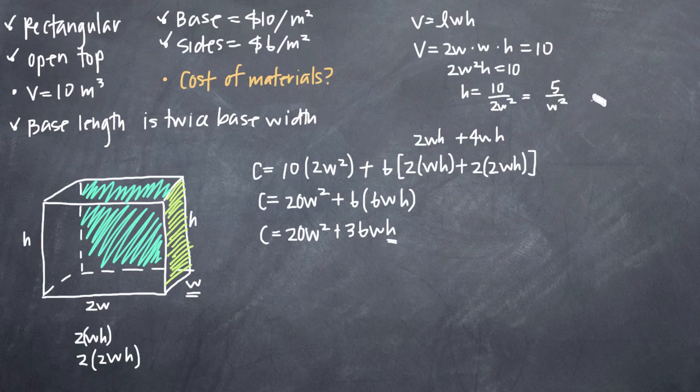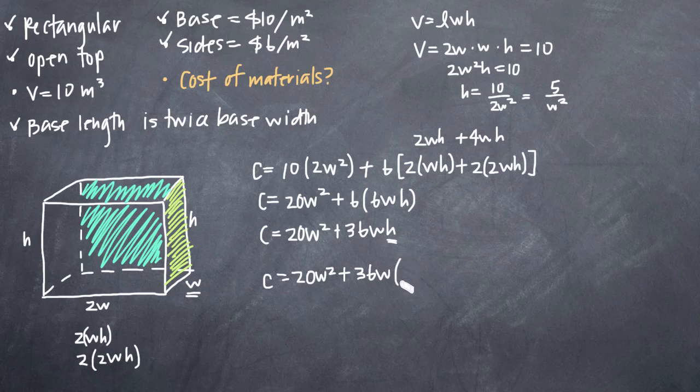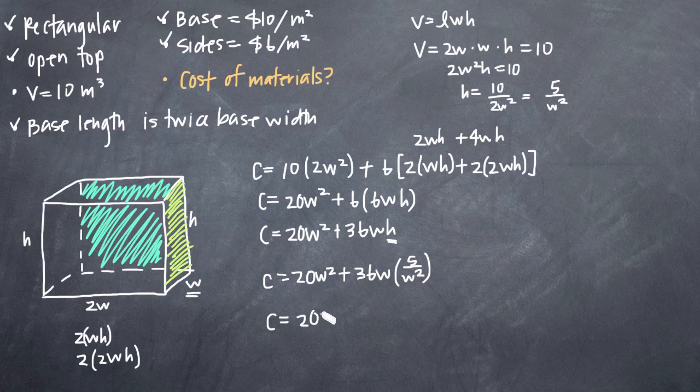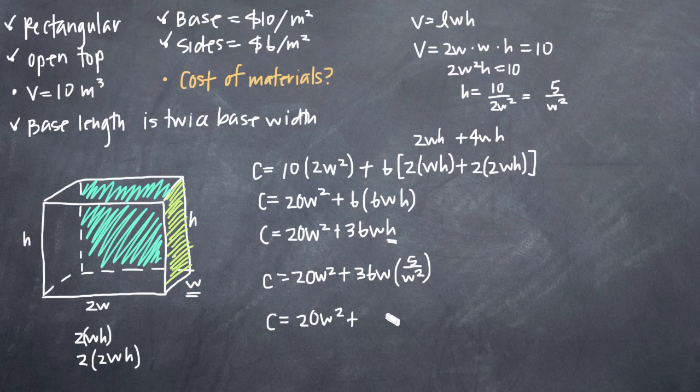This is now what we can plug in for h in our cost function. So we'll see that cost is equal to 20w squared plus 36w times what we got for h which was 5 over w squared. And because we now have a w in the numerator and denominator of this second term here, we can cancel one of those to see that our cost function is